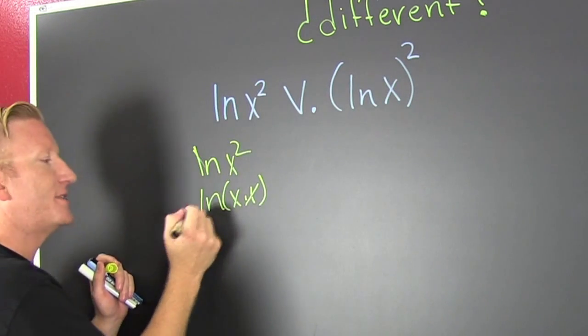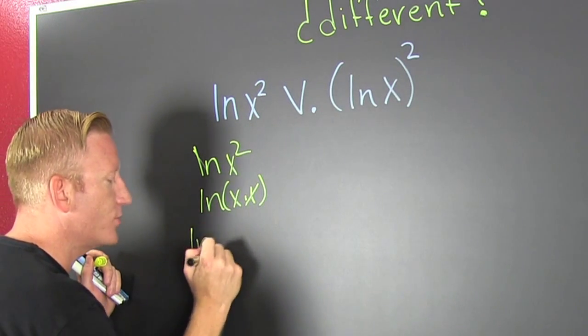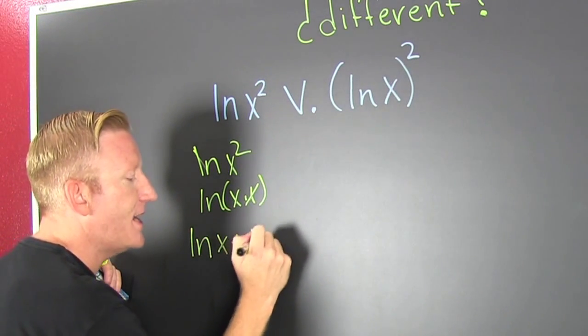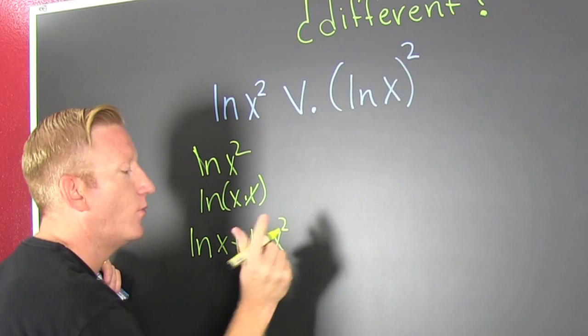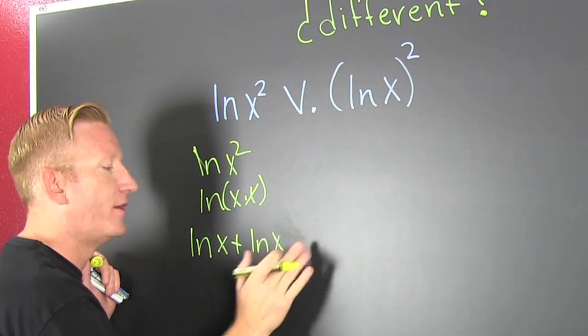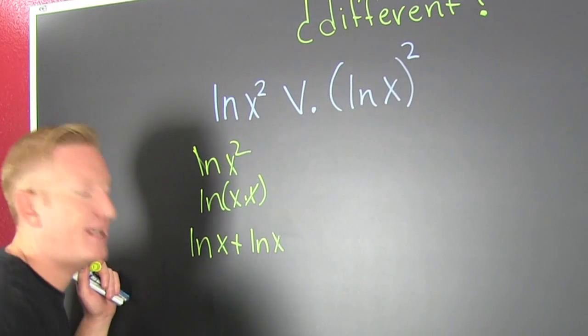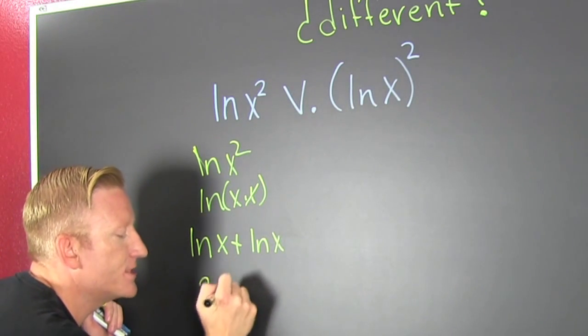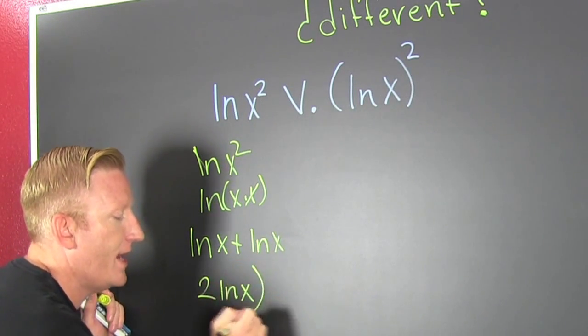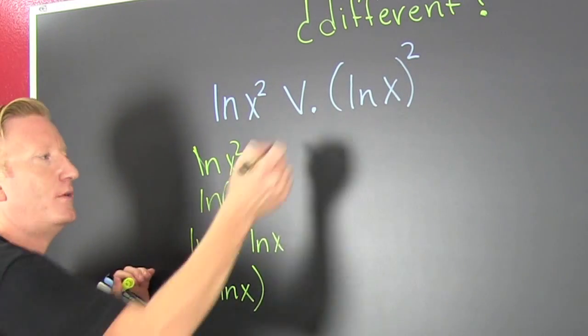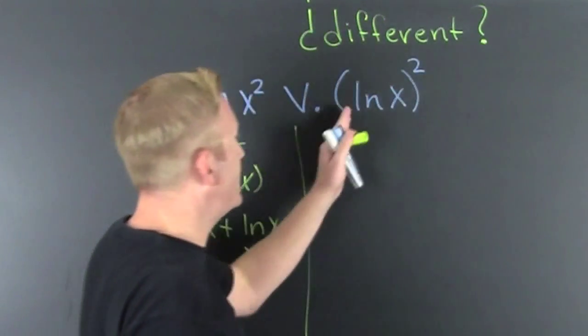...plus the natural log of x. Whoa! There's a two involved, but it's not here—it's here. That's two times the natural log of x. How is that different than this?